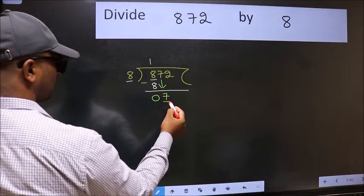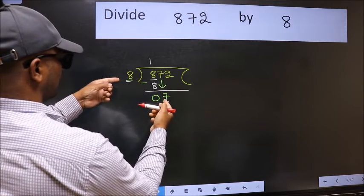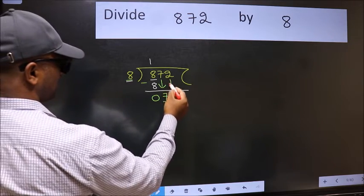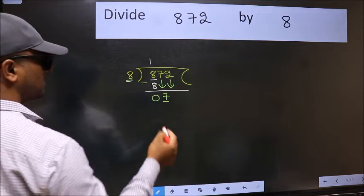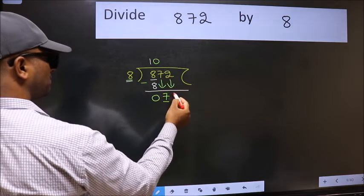Now here we have 7 and here 8. 7 is smaller than 8, so we should bring down the second number. And the rule to bring down the second number is we should put 0 here, then only we can bring this number down.